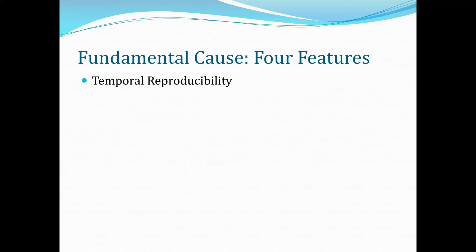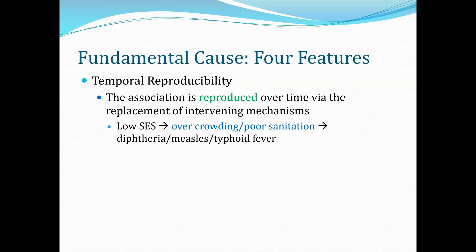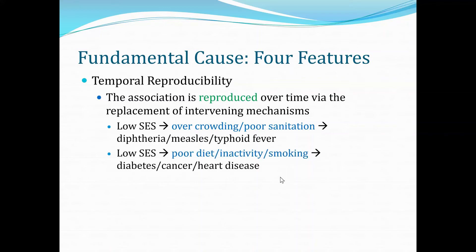The third feature is temporal reproducibility — the association is reproduced over time via replacement of intervening mechanisms. In the past, low SES led to diphtheria, measles, and typhoid fever via overcrowding and poor conditions. Today, low SES is still one of the most important predictors of poor health, but via a different set of mediators — poor diet, inactivity, and smoking — and the associated health conditions are now diabetes, cancer, and heart disease.